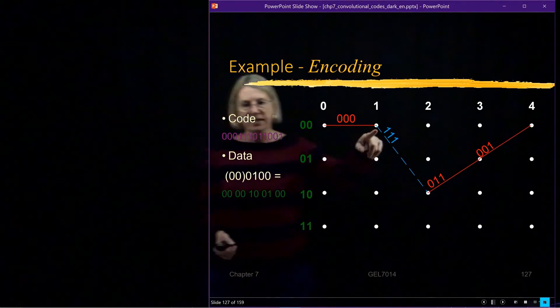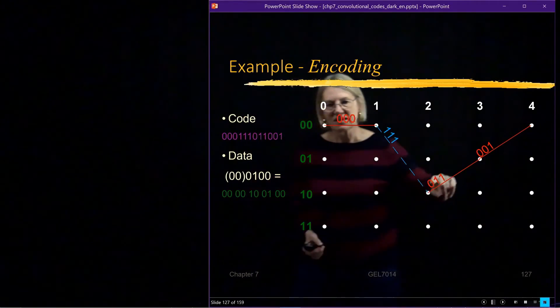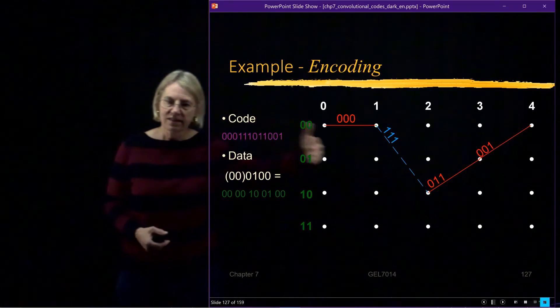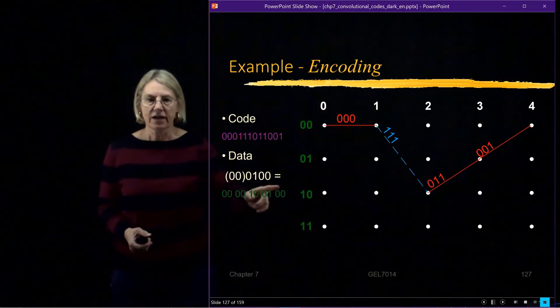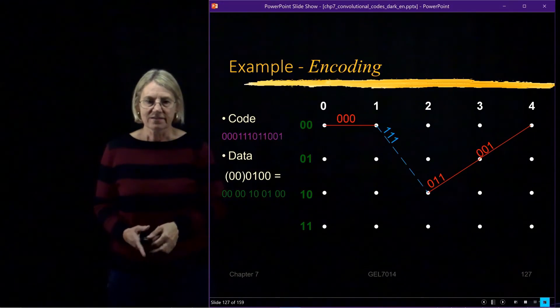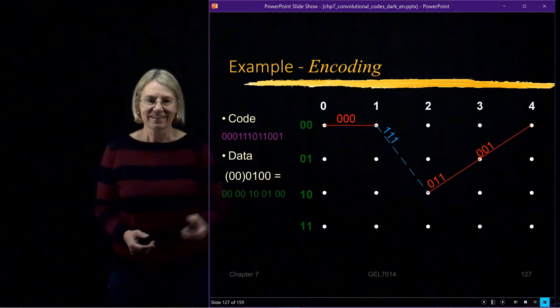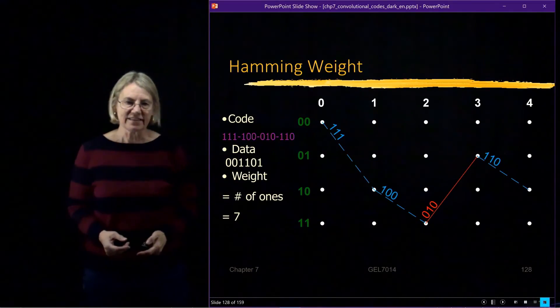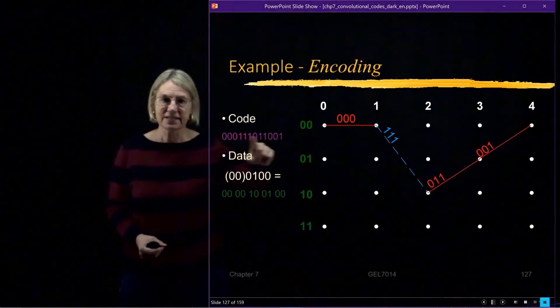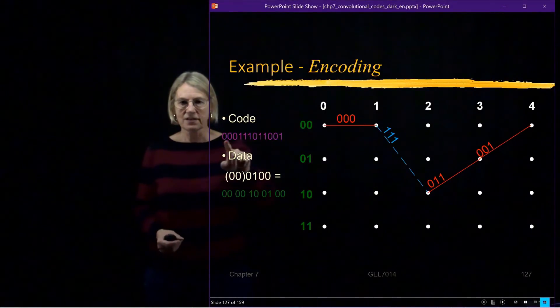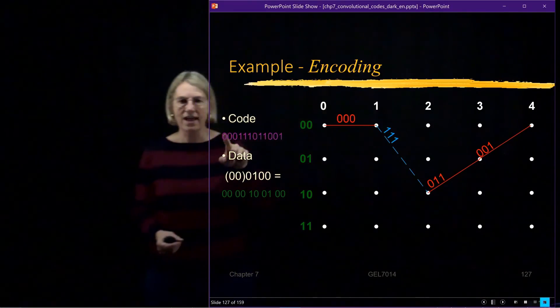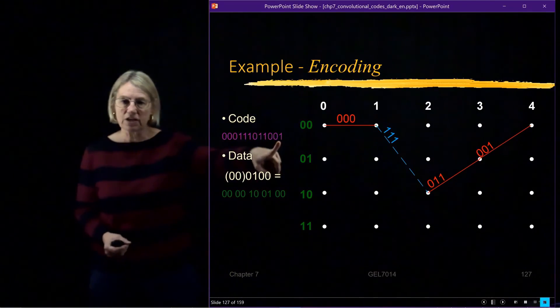So this would be the path that represents these four data bits, 0 1 0 0. Zero the red solid, one the blue dashed, zero the red solid, red solid. So that path represents the path through the encoder. And if I read the states that were included, or I could look at the code. So here we see the code that's transmitted. We have the 3 zeros, 3 ones, 0 1 1, 0 1 0. So here I have the output of the encoder in terms of the code that's transmitted.